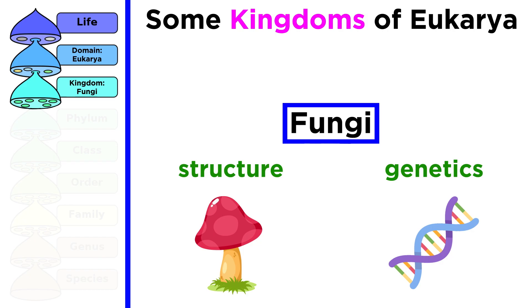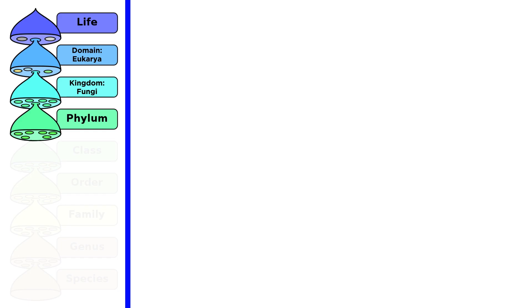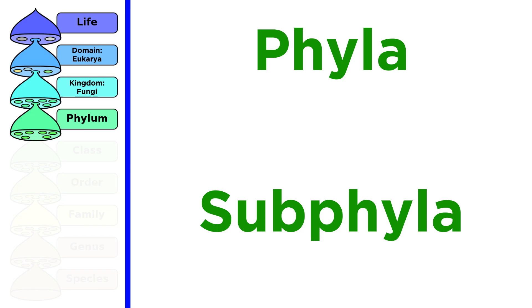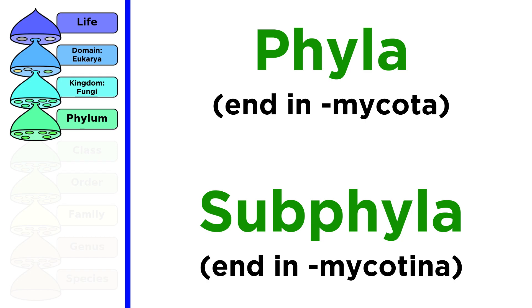Any organism within this kingdom is considered a fungus. Mycologists use structural patterns and genetic factors to classify each fungal species into their respective taxa. The taxon below the kingdom is called the phylum. The precise number of fungal phyla and their names has changed quite a bit over the past few decades, as mycology is a young and dynamic field, and there are some differing opinions as to which groups should qualify as phyla and which should be referred to merely as subphyla.